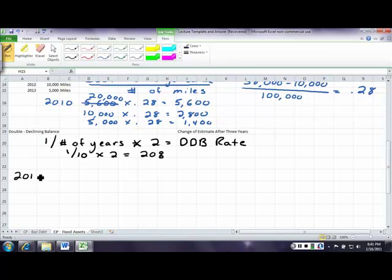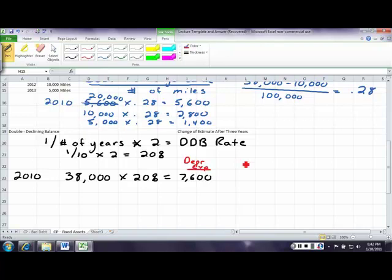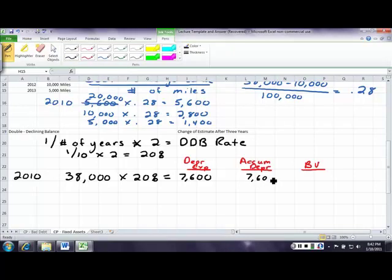I am assuming this is going to depreciate at a rate of 20% per year. So for the year 2010, I'm going to take my cost of $38,000 times 20%, and I'm going to depreciate $7,600. This is my depreciation expense. My accumulated depreciation is just going to be my total depreciation so far, and my book value is my cost minus my accumulated depreciation. So this number is still $7,600. $38,000 minus $7,600 gives me a book value of $30,400.